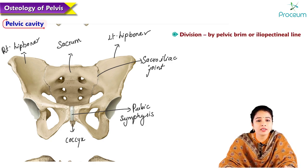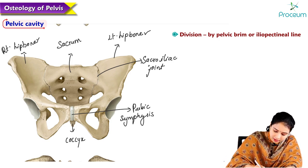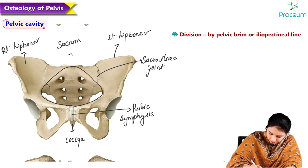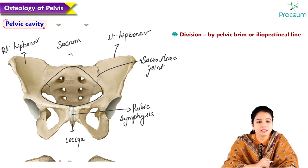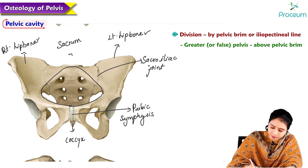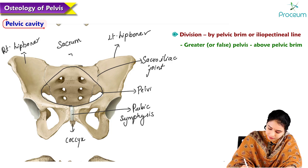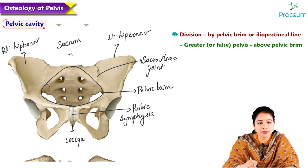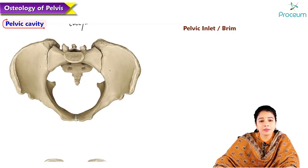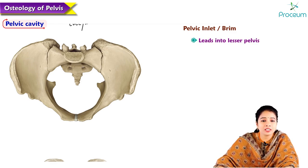The pelvic cavity is divided by the pelvic brim or ileopectineal line into two parts. Above the pelvic brim is the greater or false pelvis; below the pelvic brim is the lesser or true pelvis. The pelvic inlet, otherwise called the pelvic brim, leads into the lesser pelvis and is the superior rim of the pelvic cavity.